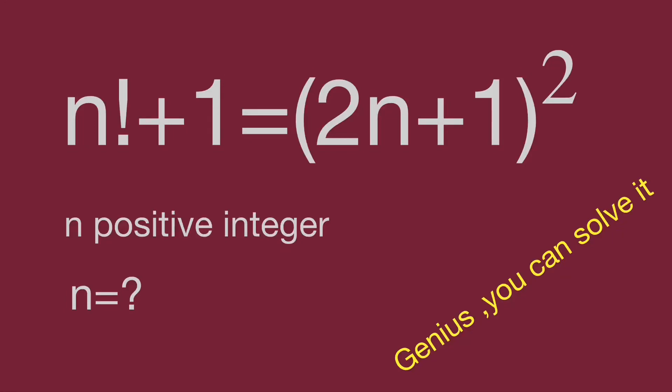Hello, you are watching Balhibo Math Genius Readers. We have a math exercise for factorial questions. While n factorial plus 1 equals the quantity 2n plus 1 squared, and n is a positive integer, find the value of n.